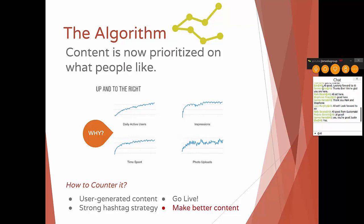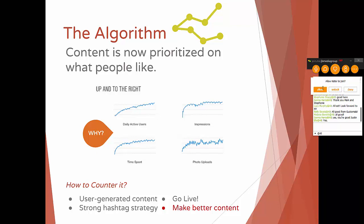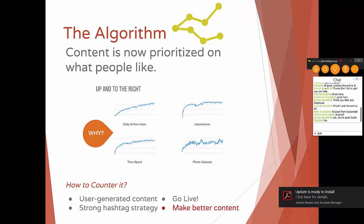It's prioritized on what people like — a very basic algorithm based on engagement. So if you comment, like, and look at people's Instagram posts for a long amount of time, that's the kind of stuff you're going to see more of. It's always a little frustrating for marketers when an algorithm gets introduced because it means there's a chance you're going to get less engagement. But when they did this algorithm, they did see daily active users, impressions, time spent on the platform, and photo uploads all go up by a pretty dramatic factor.